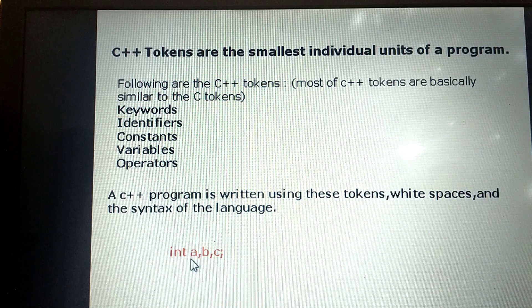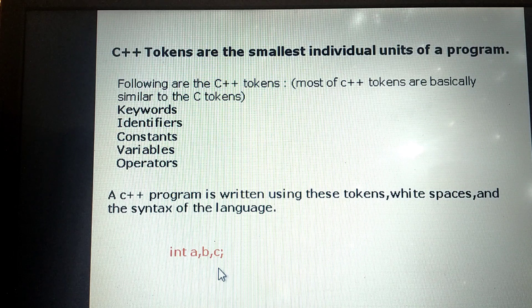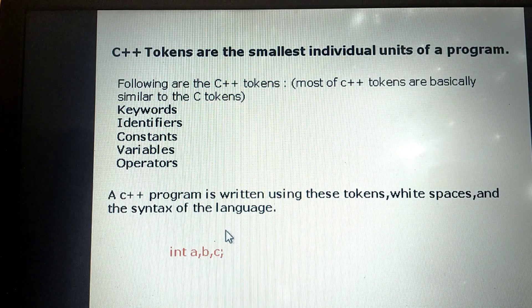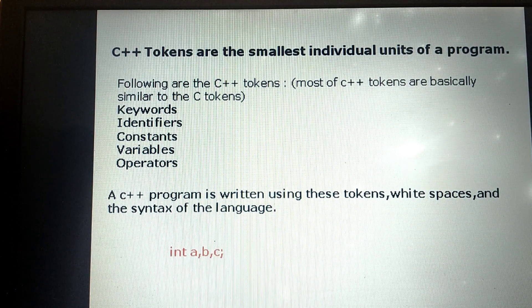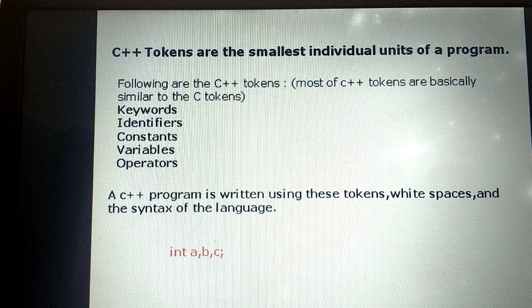The common rule is: start with the data type, then the names of the variables, give a space between the data type and variables, and end with a semicolon. This is how we write statements using tokens, white spaces and the syntax of the language. This is not only for C++. Whatever programs you are writing — whether it is C, C++, Java, ASP, or any language — the program is written using these small individual units. All these small units are called tokens.